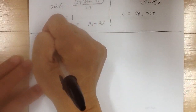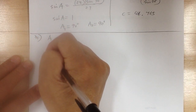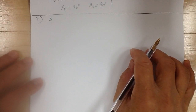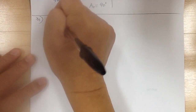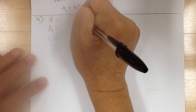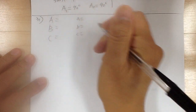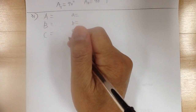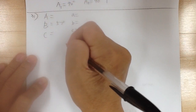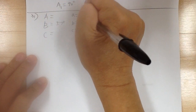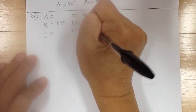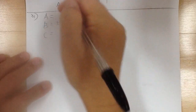Let's go to number 31. You've got A, B, C — angles and sides. B is 57 degrees, small a is 47 feet, and small b is 62 feet.